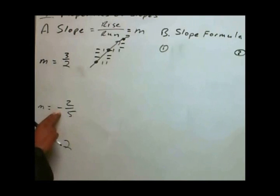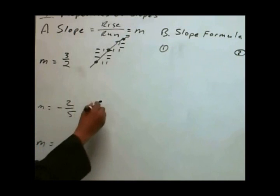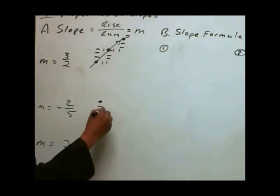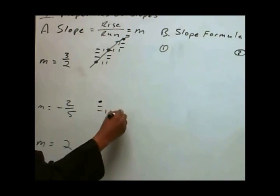For negative slopes, we typically associate the negative with the numerator. So for negative two-fifths, what we get is a fall two, run five. From this point, fall two and then run five — one, two, three, four, five.